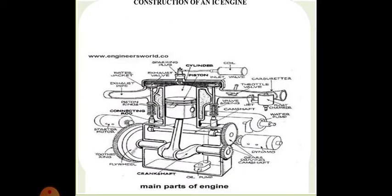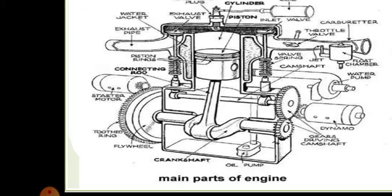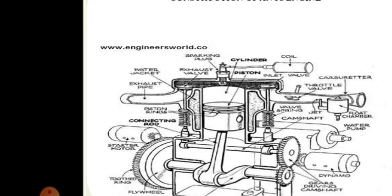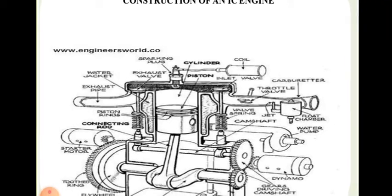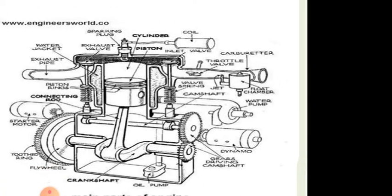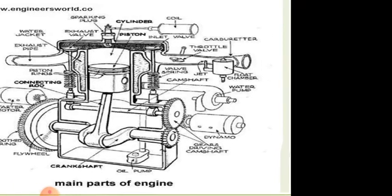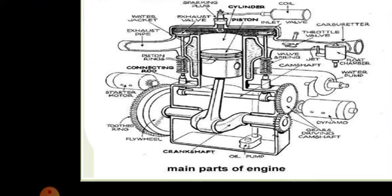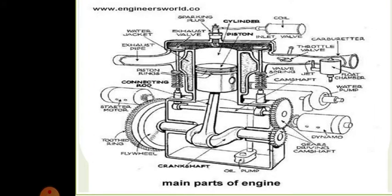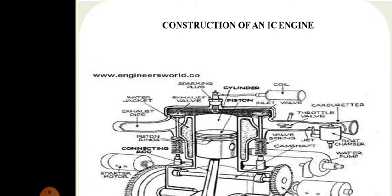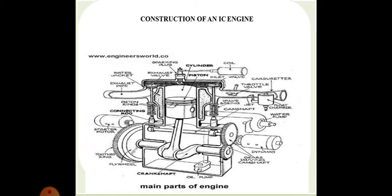Now we come to the construction of an IC engine. The main parts of an engine include: water jacket, exhaust valves, spark plugs, cylinder, piston, fuel inlet valve, carburetor, throttle valve, valve springs, camshaft, jet, float chamber, water pump, dynamo, gear driving camshaft, oil pump, crankshaft, flywheel, starter motor, connecting rod, piston rings, exhaust pipe, and the water jacket.